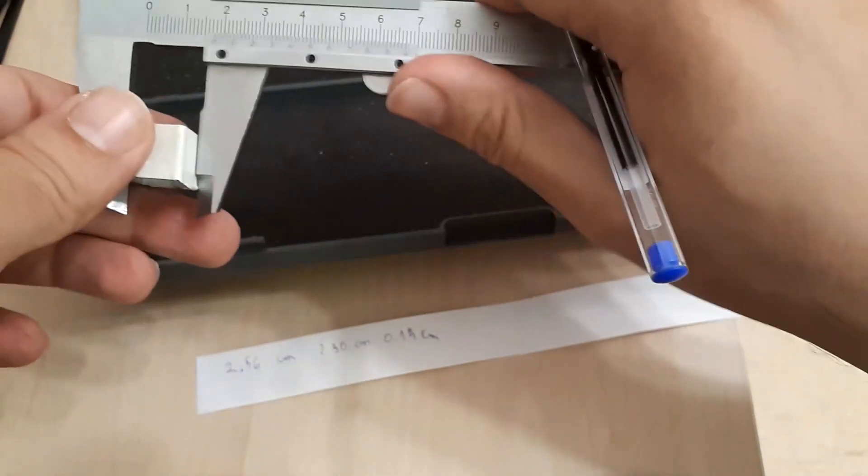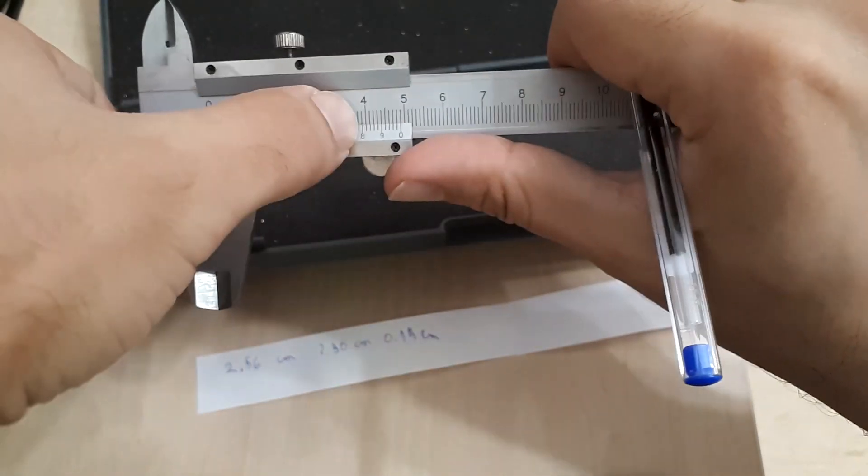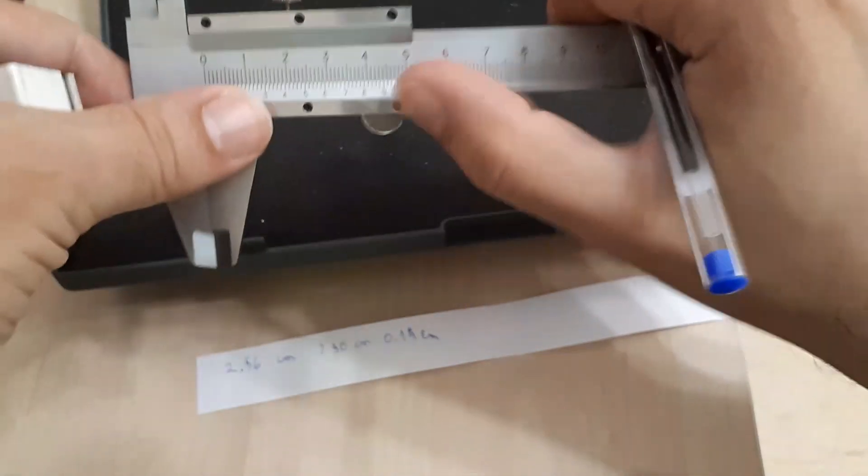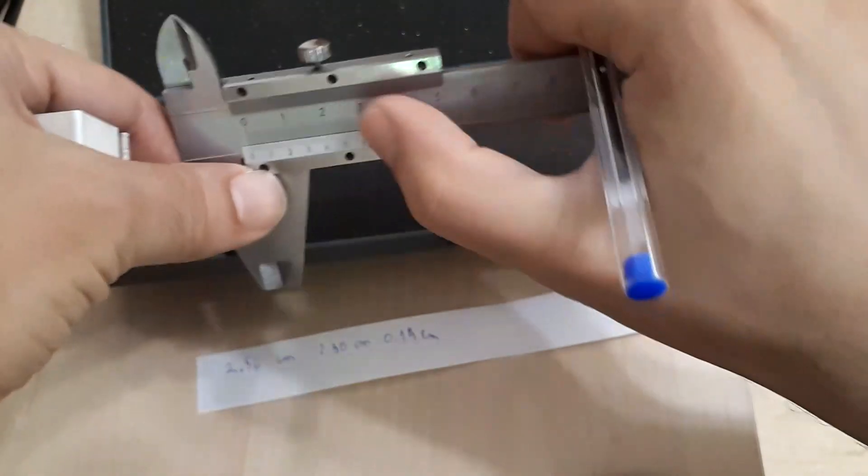There are Vernier scales that have better accuracy and they may make it slightly easier to make some measurements but in general this is the kind of shortcomings you are going to see.